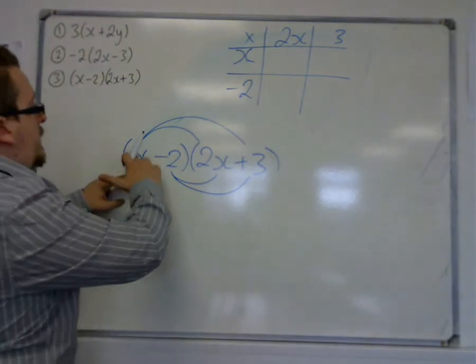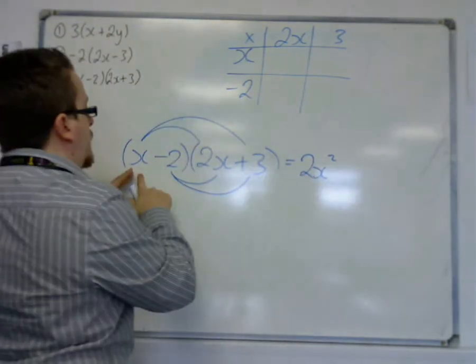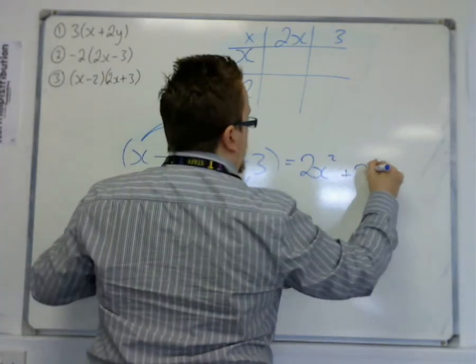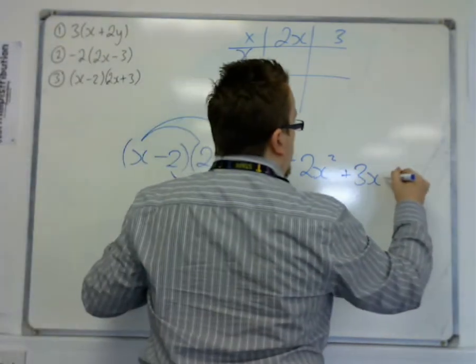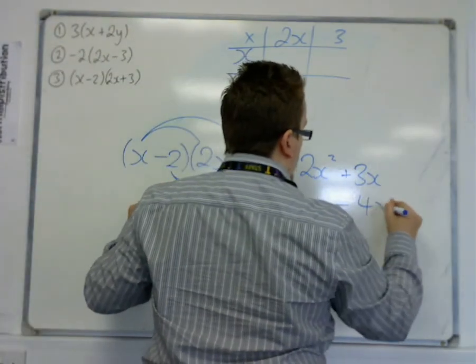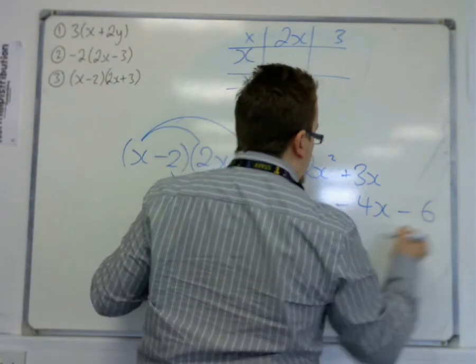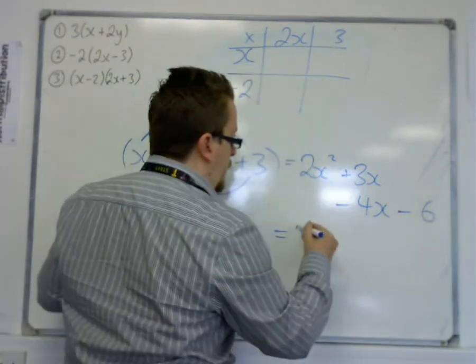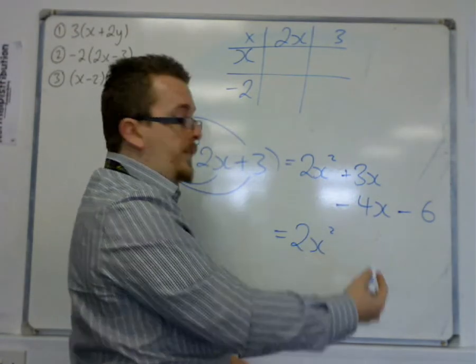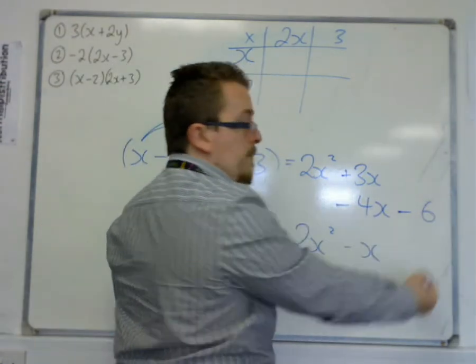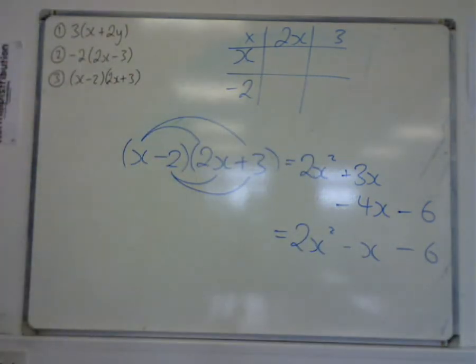So we have x times two x makes two x squared. X times the three is three x. Minus two times two x is minus four x. And we have minus two times three is minus six. So we've got two x squared, three x take away four x is minus x and minus six at the end. So that's multiplying out the double brackets.